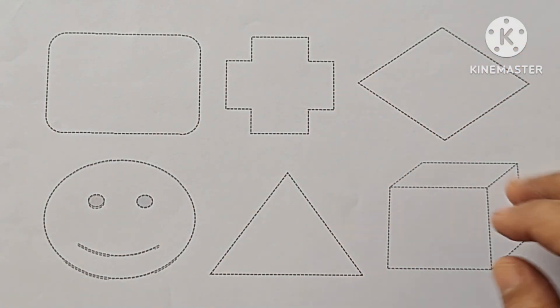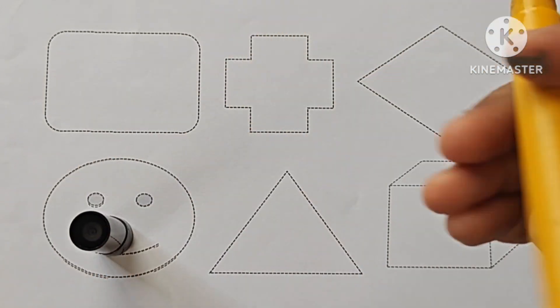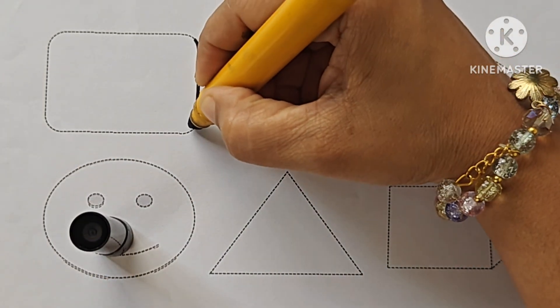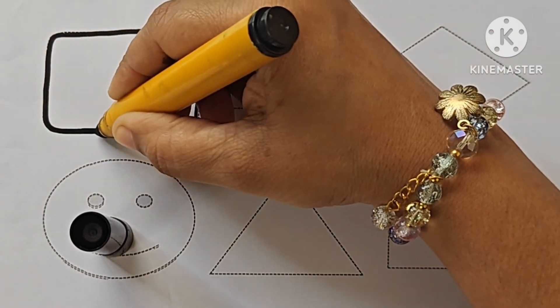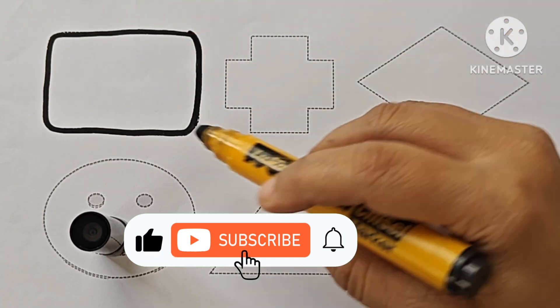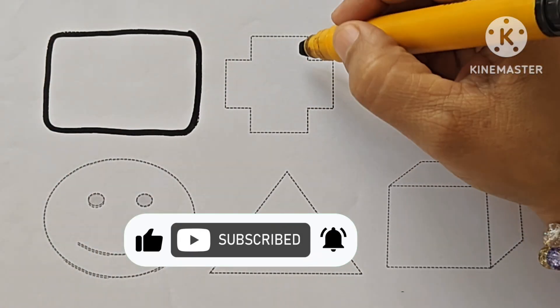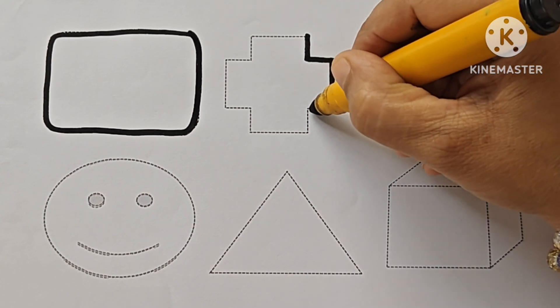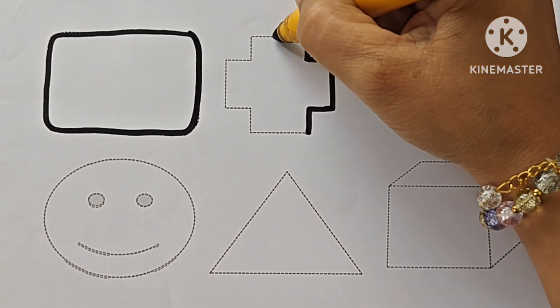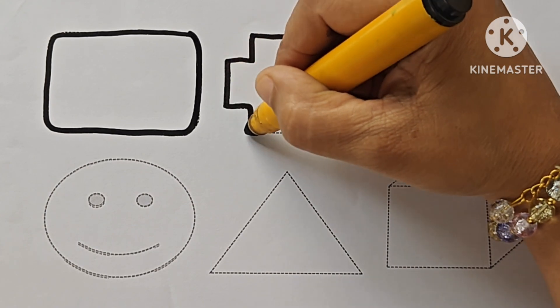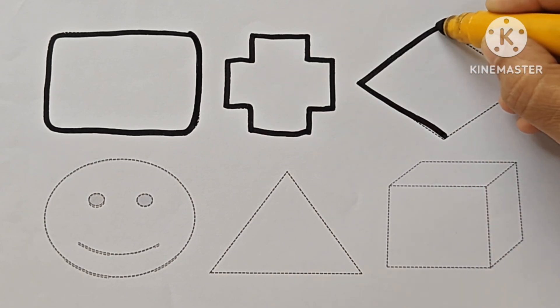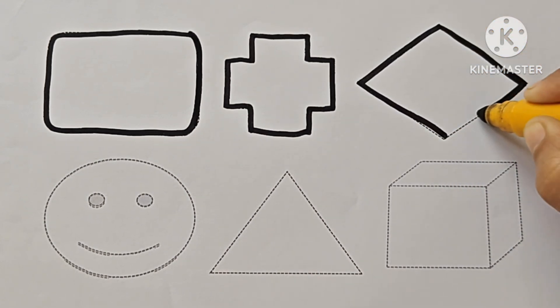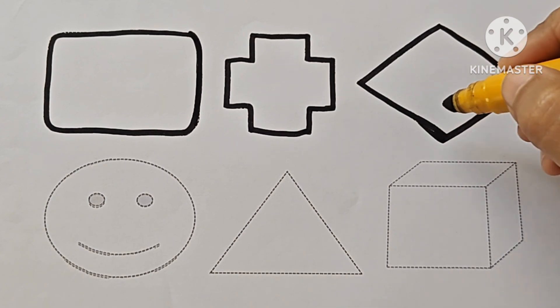Hello kids, in this video we will learn 2D shapes and color names. Let's draw the shapes. This is black color rounded rectangle. Cross. Rhombus or diamond.